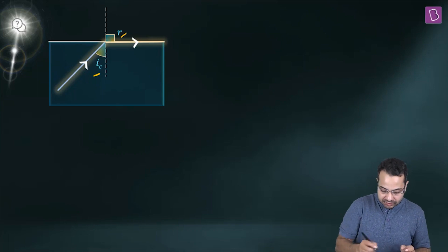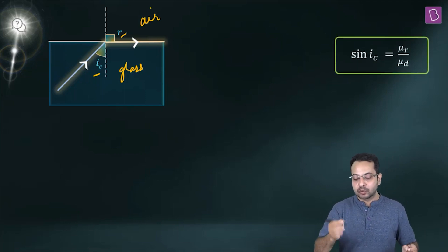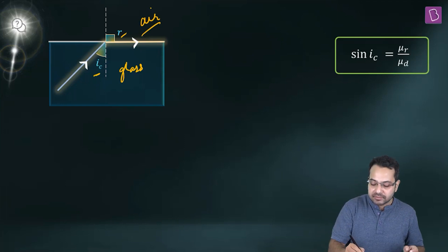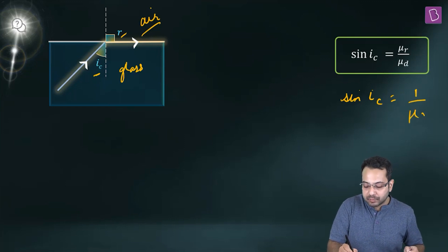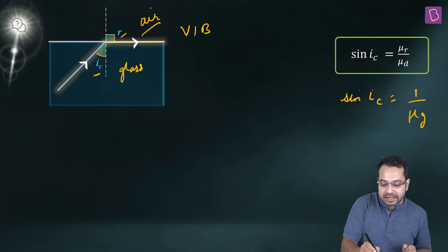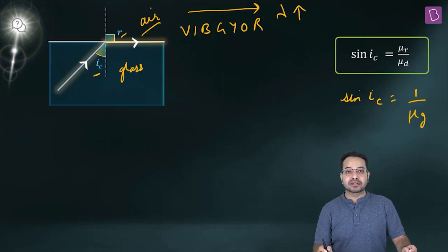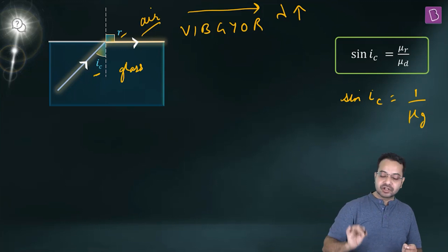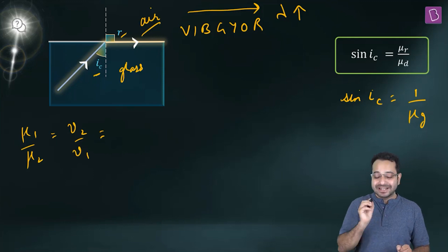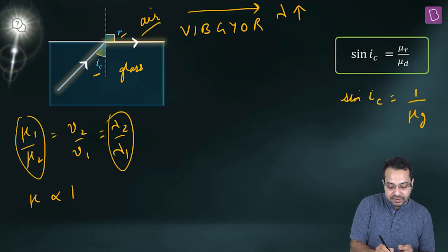The mu of glass depends on the color of light. Going in the direction of VIBGYOR from violet to red means increasing wavelength. Since mu is inversely proportional to lambda (from the relation μ₁/μ₂ = v₂/v₁ = λ₂/λ₁), as wavelength increases from violet to red, mu decreases, so 1/μ_g increases, and since sine is an increasing function, the critical angle increases.